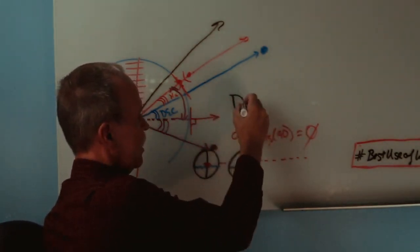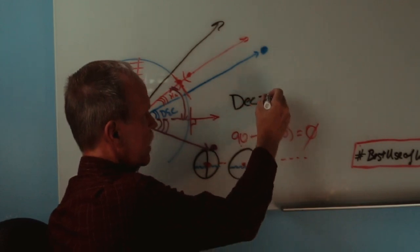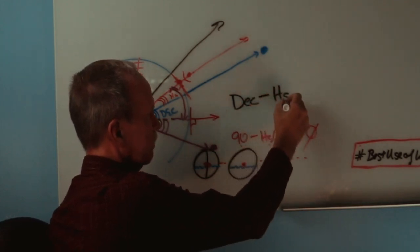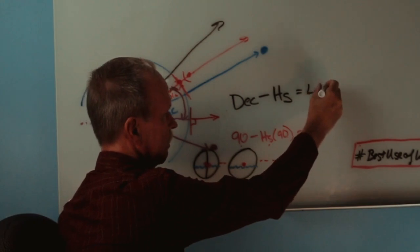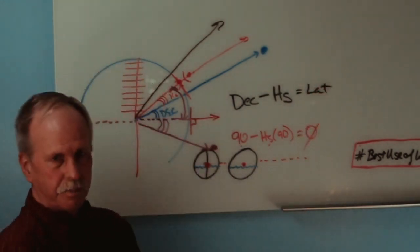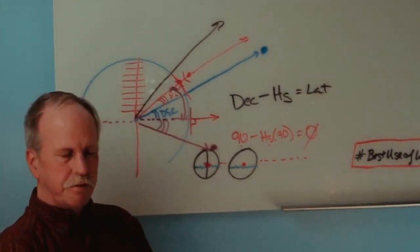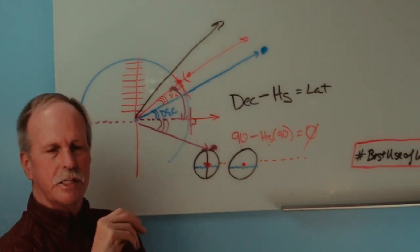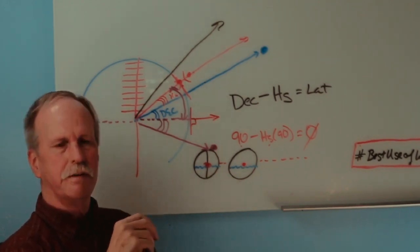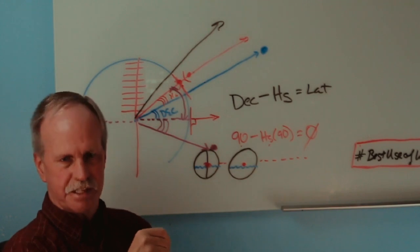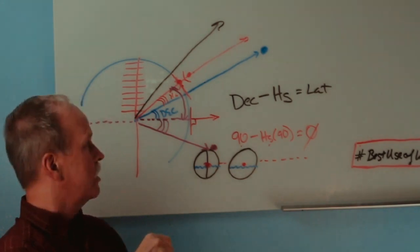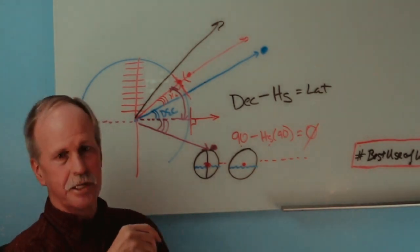In that case, what you would do is reverse this. You would take the declination minus your reading equals your latitude. When you're doing this, first of all you kind of know more or less where you are in the world. I mean, there's a big difference between Hudson Bay and the Bahamas.